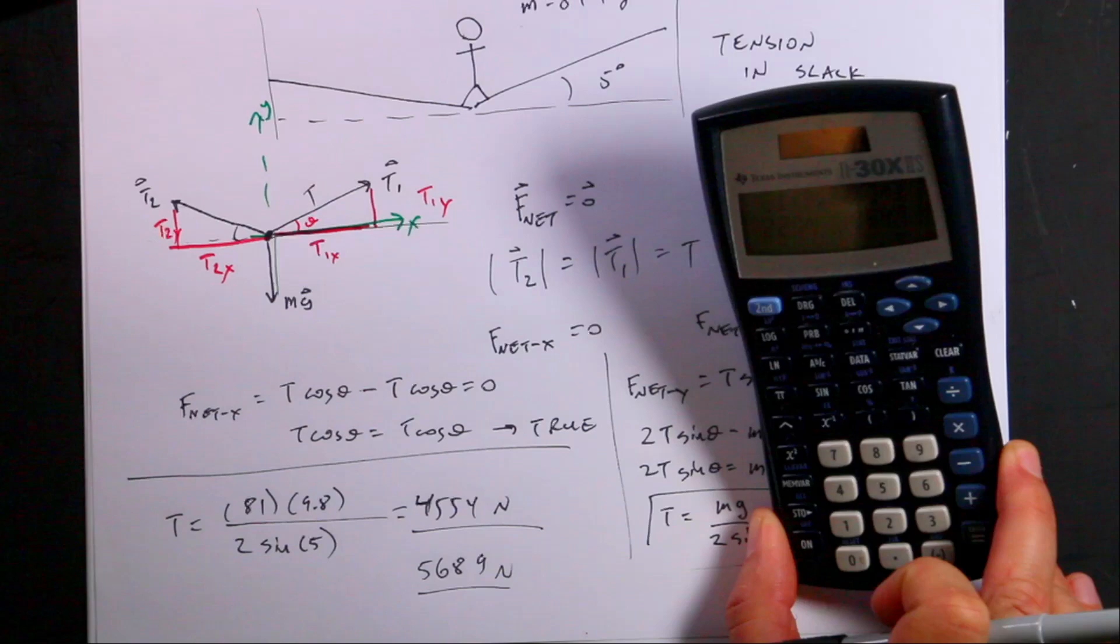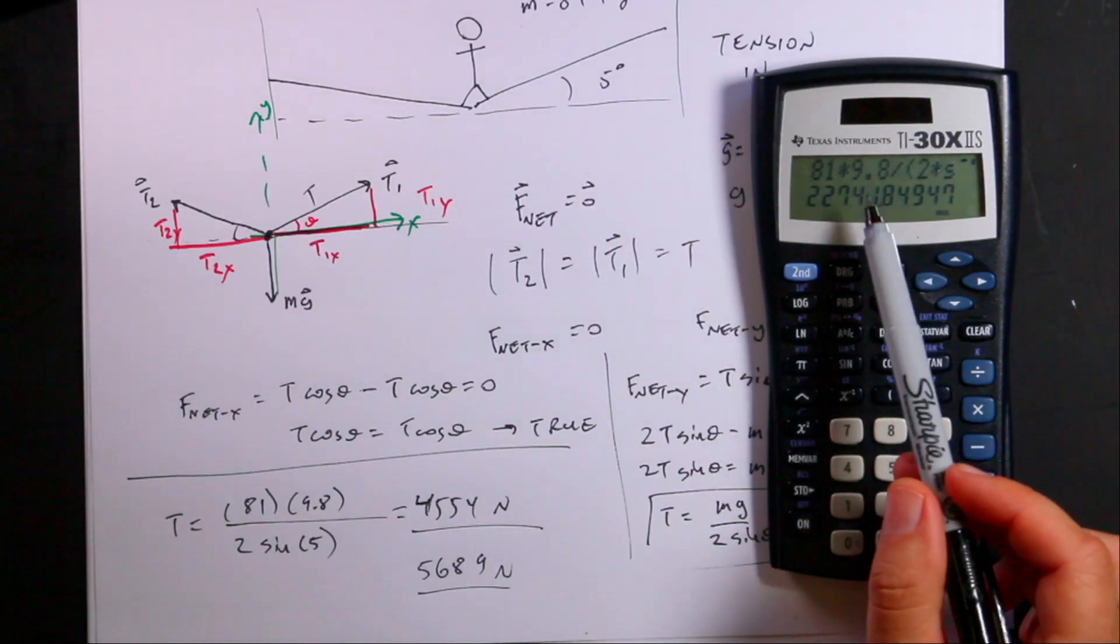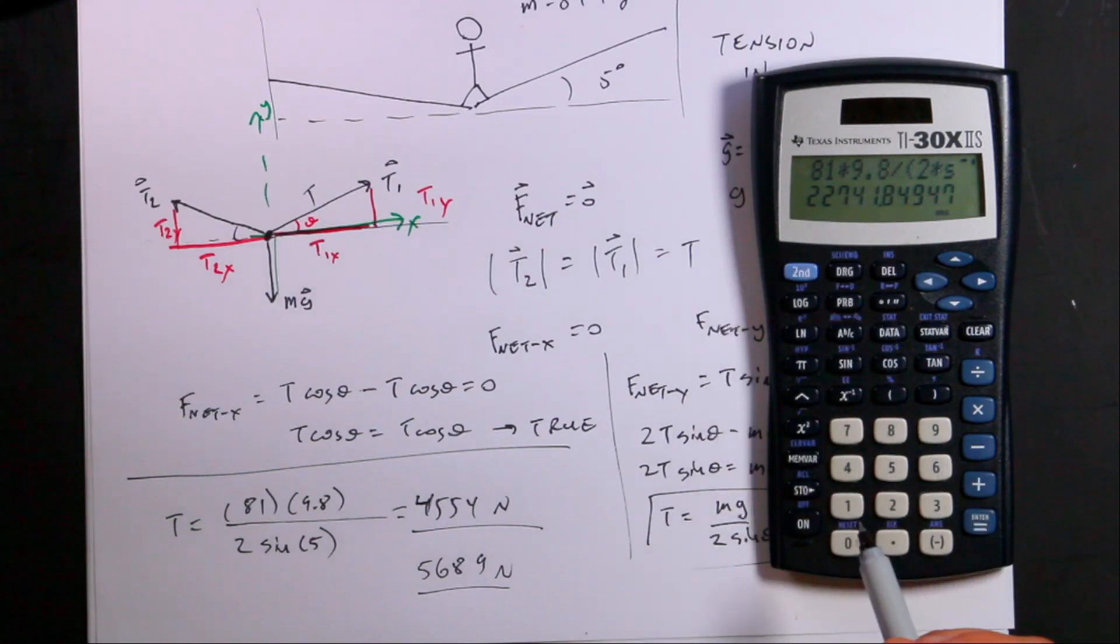I get 22,000 newtons. Is that right? I think it's hard to see the glare. Yeah. 22,000 newtons.